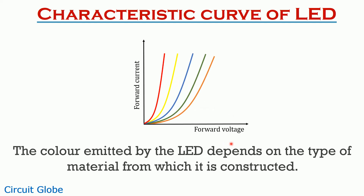Let's have a look at the characteristic curve of an LED. The figure shows the curve between the forward voltage applied to the device and the current that flows through the device on application of voltage. We can say that the current flowing through the device depends on the forward voltage, thus generating light through the diode. The different colors of the curves show the light emitted by the diode. It is noteworthy that the color emitted by the LED depends on the type of material from which it is constructed.